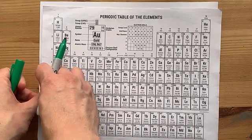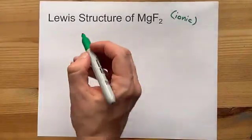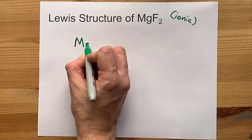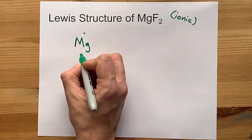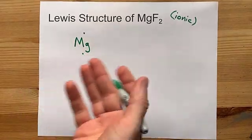Magnesium is in group two, so it brings two valence electrons with it. There's my Mg. One, two valence electrons. Great.